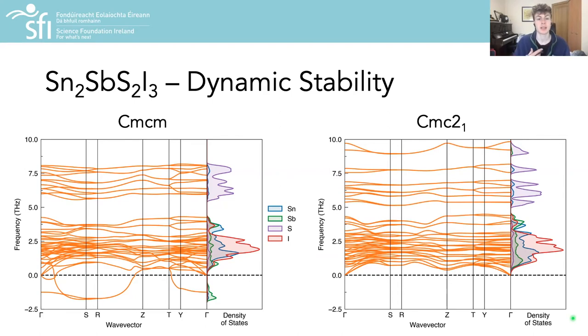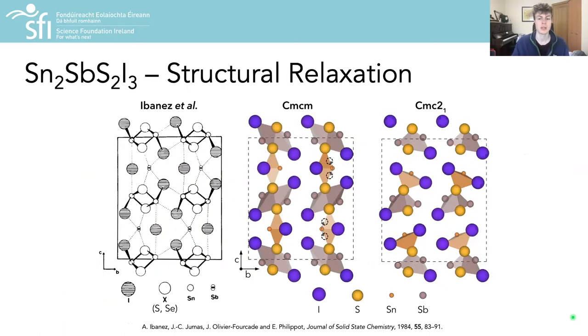Essentially this means that the Cmcm phase is meant to be a saddle point rather than a true minimum on the potential energy surface. Looking deeper into the experiments done in the 1980s, we see that they did in fact note improved agreement of the XRD data with the structural model when you instead assigned antimony to this split 8f Wyckoff position with 50% occupancy, which corresponds to the direction of the antimony position shift in going from Cmcm to Cmc2₁.